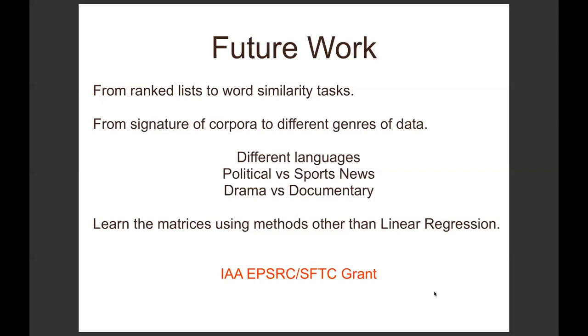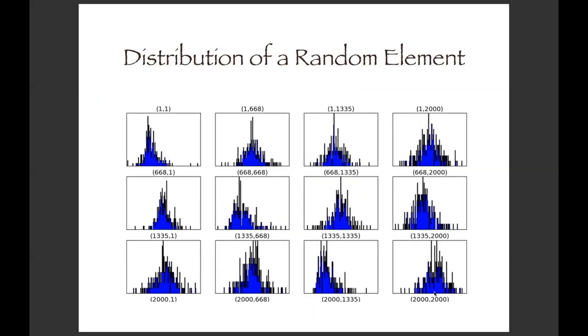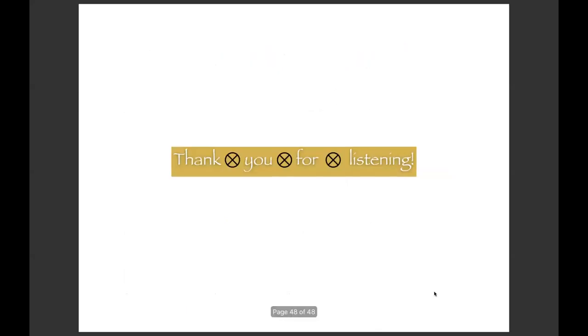We've just got an IAA EPSRC/STFC grant to deal with this. Last year when we presented this paper, people asked 'how do you know these matrices are Gaussian? You're assuming that they're Gaussian and they might not be.' But by plotting some of these properties, they look quite Gaussian to me. Thank you for listening.